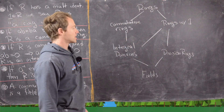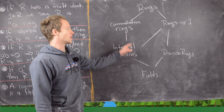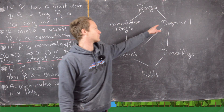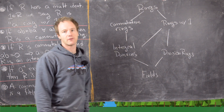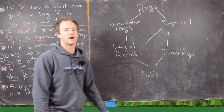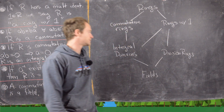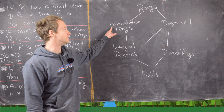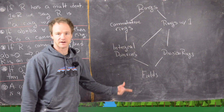We have a chart showing the inclusion of all of these. Rings are the most general and fields are the most restrictive — going from top to bottom, more general to more restrictive. Off of rings we have commutative rings and rings with 1. Integral domains are both commutative rings and rings with 1, but also satisfy the no-zero-divisors condition. Division rings are rings with 1 but may not be commutative. Fields are both integral domains and division rings.